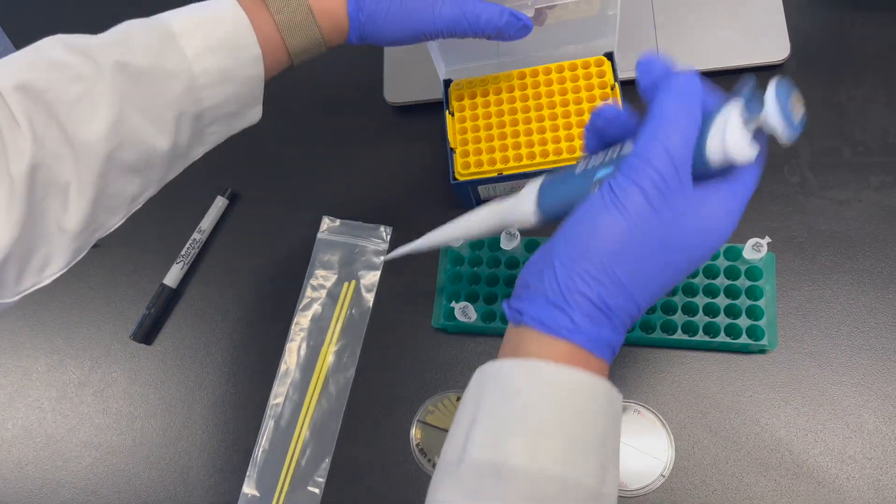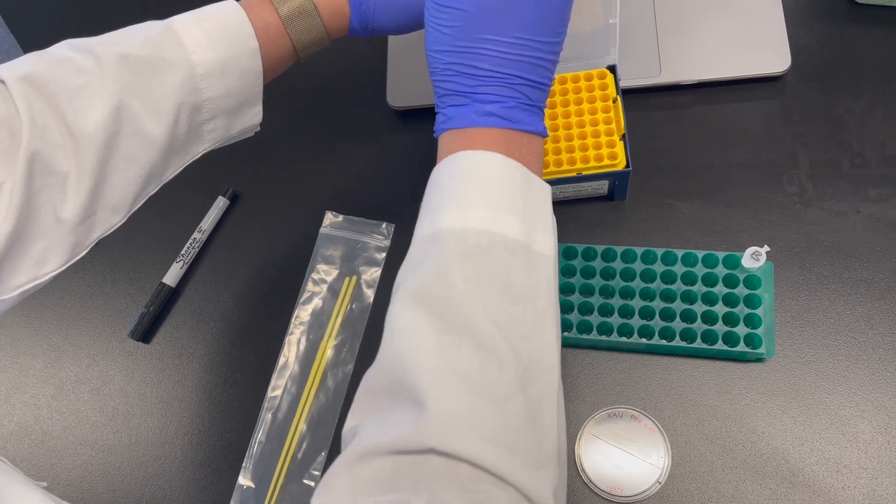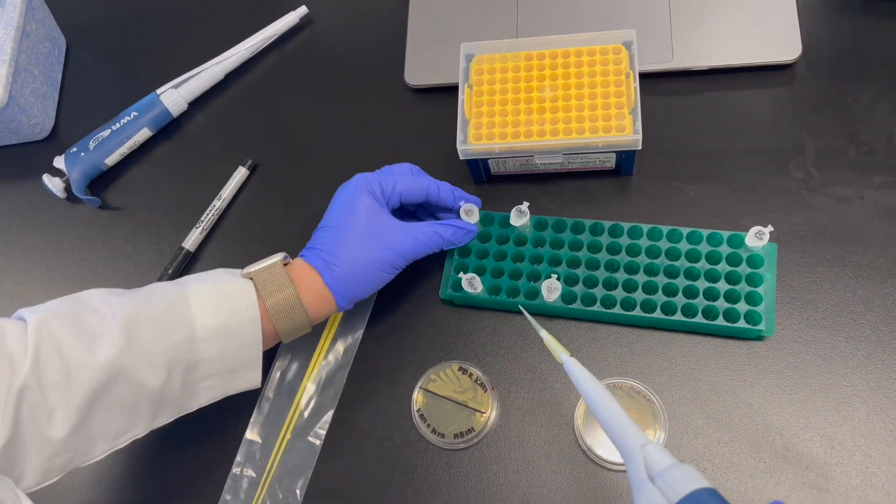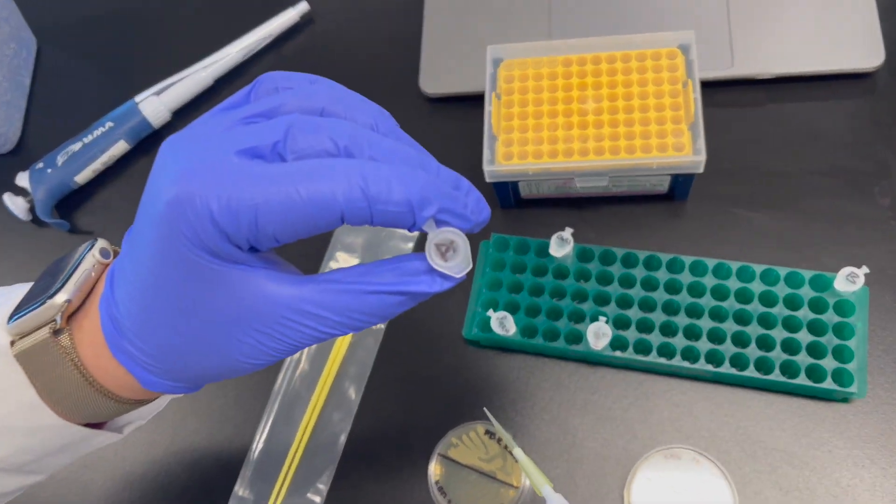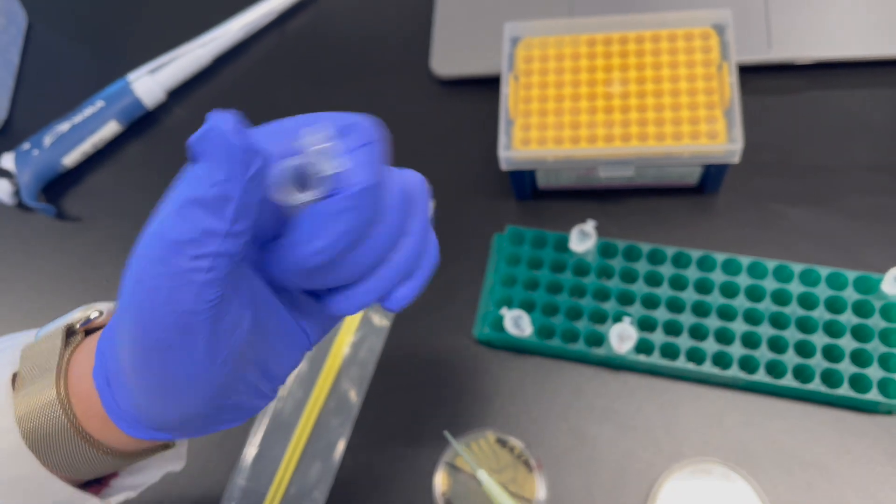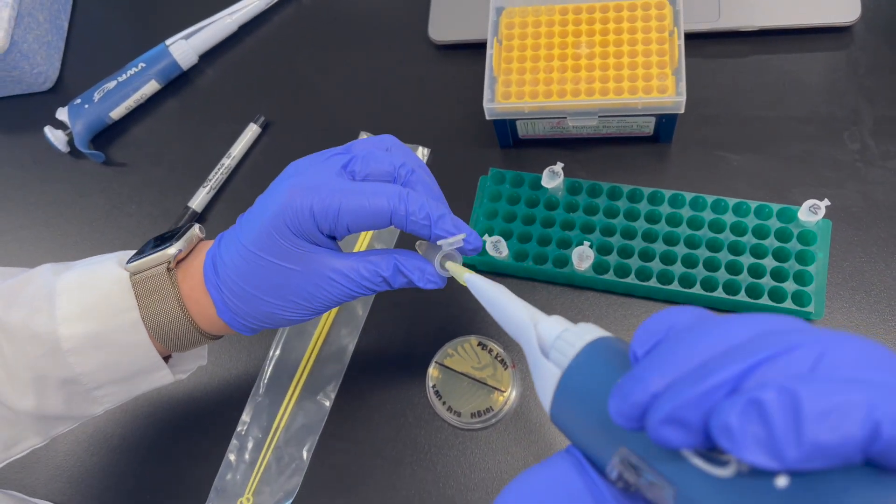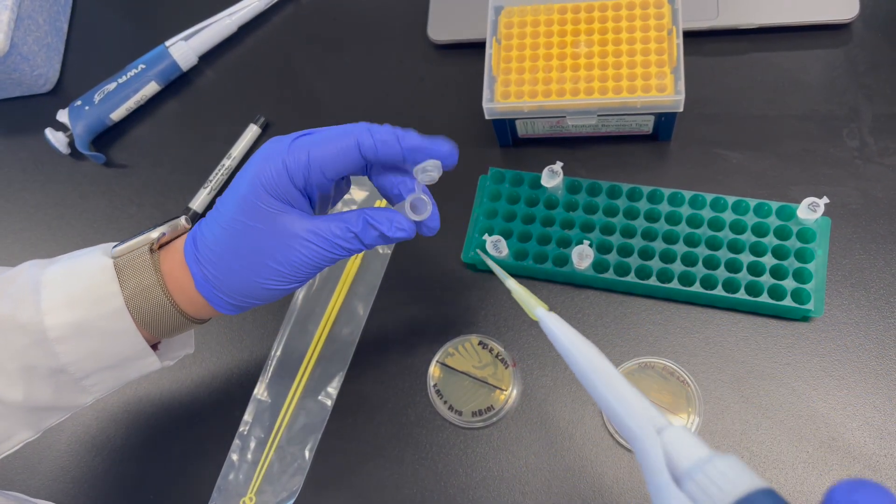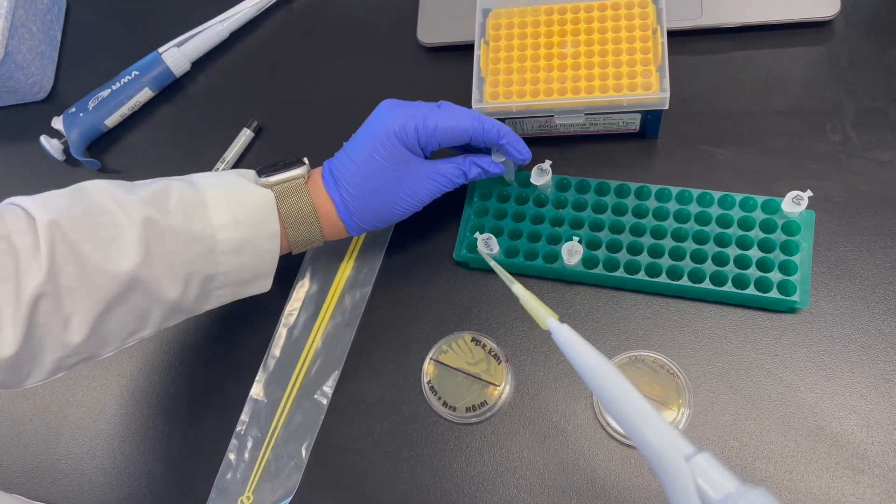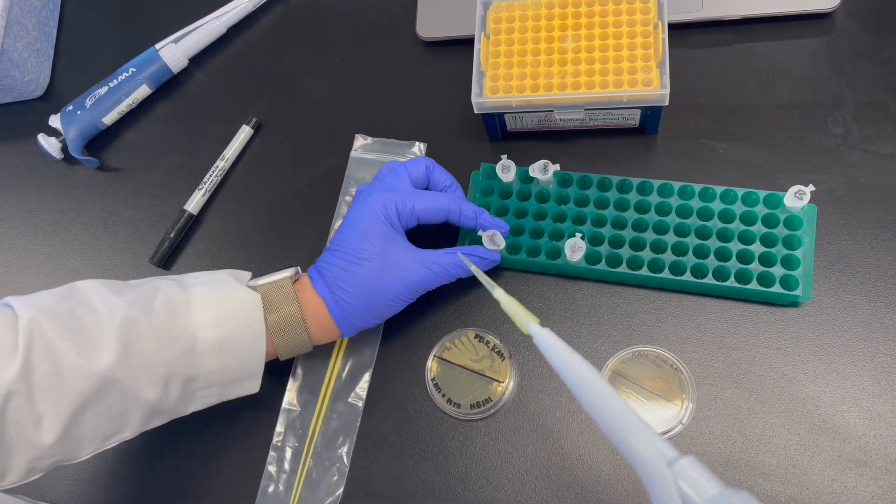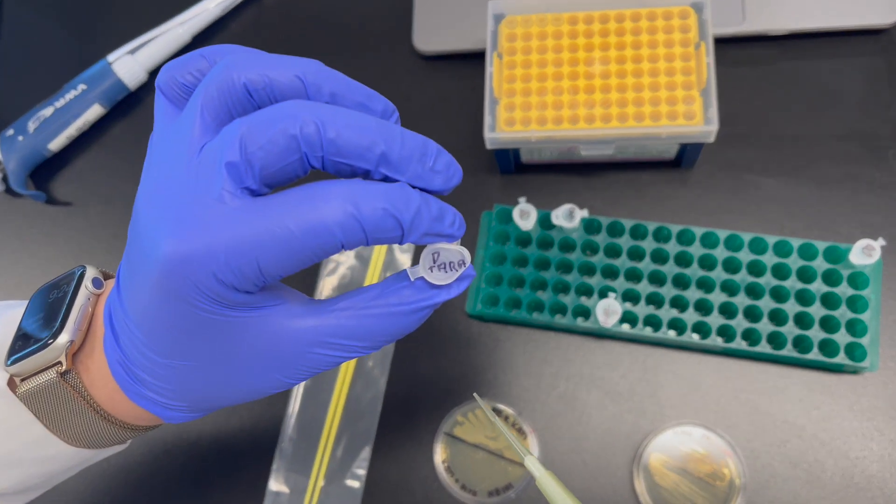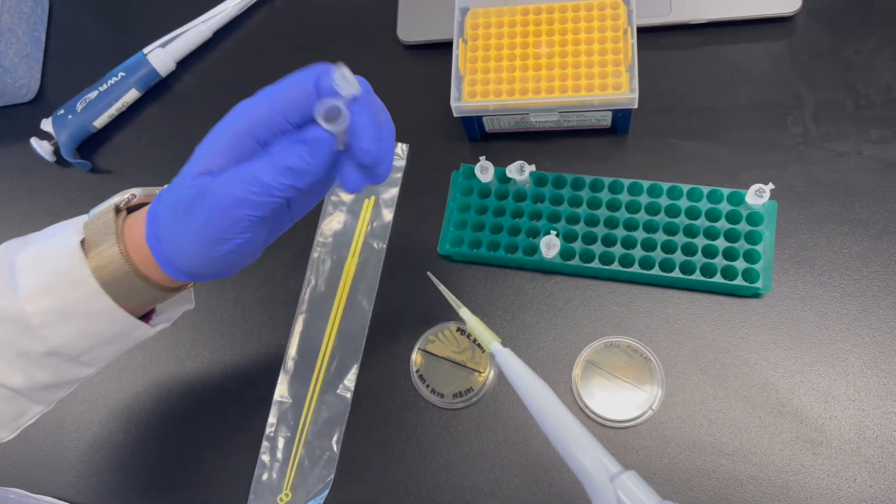Using a P20 micropipette, set it to 10 microliters and grab the plasmid A, which is the tube with just the donor. Place that into the first tube labeled D.